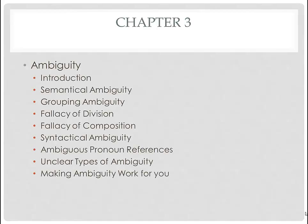It comes from the term semantics, which roughly put means meaning. A semantically ambiguous term or claim is one whose ambiguity is due to the ambiguity of a word or phrase in the claim. So if you have a claim or sentence that's ambiguous semantically, that's because there's a word or phrase that has two or more meanings, and it's not clear which is intended.